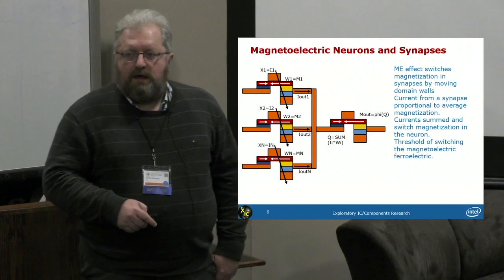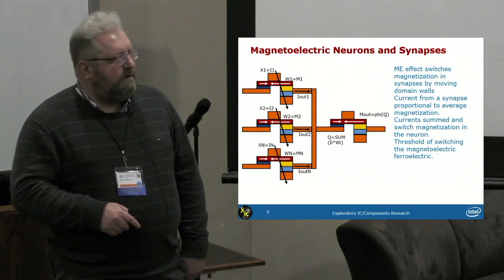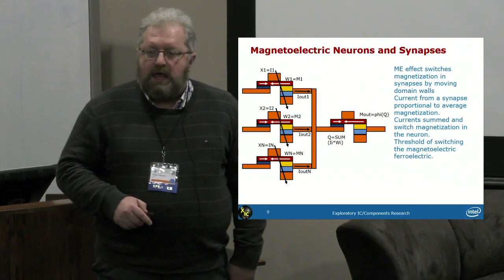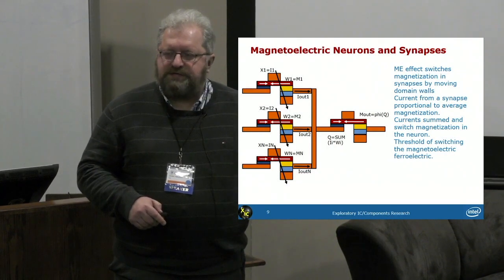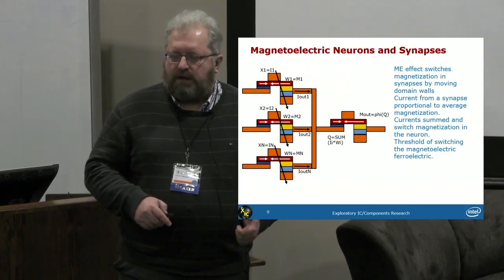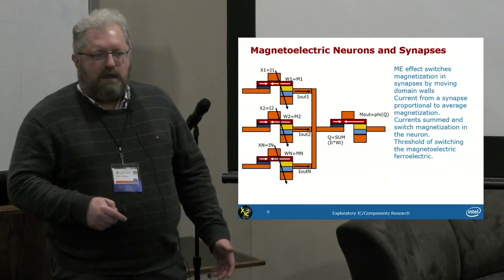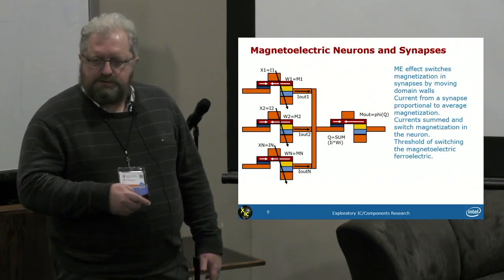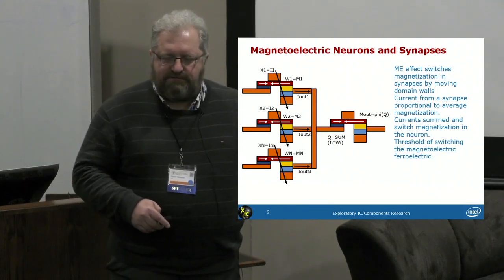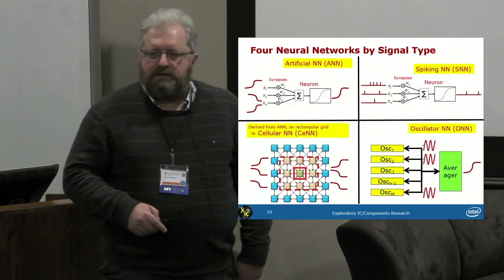Our development of that domain wall idea is magneto-electric synapses and neurons. The main difference from the previous slide is that here the magnetization in synapses and neurons is being switched by the magneto-electric effect. We've learned from our prior work that this is a more energy-efficient way to switch magnetic devices. These are just three out of 17 varieties of neurons and synapses.